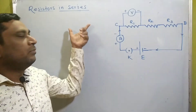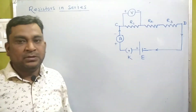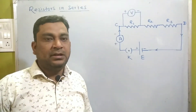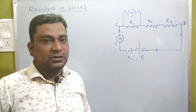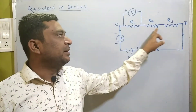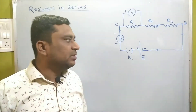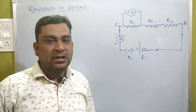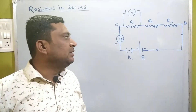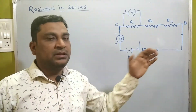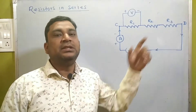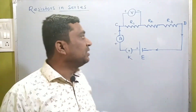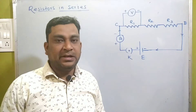Today we have to find out the expression or the derivation when the resistances are connected in series. In a series combination, resistances R1, R2, R3 — for example three resistances — are connected one after another, and such a combination is called a series combination. This is the complete circuit diagram for resistances connected in series.